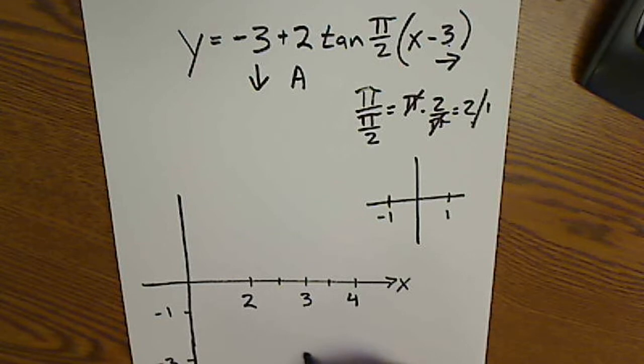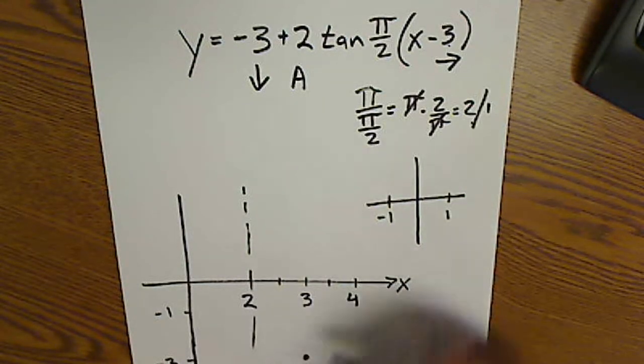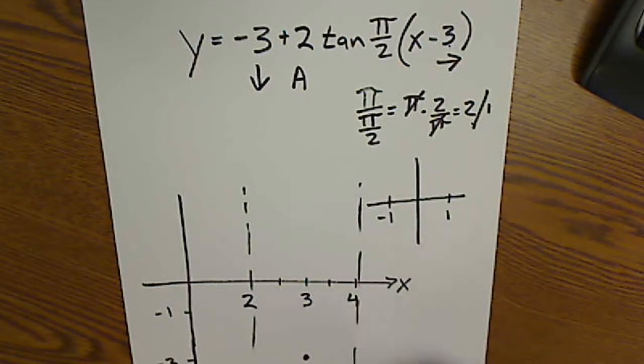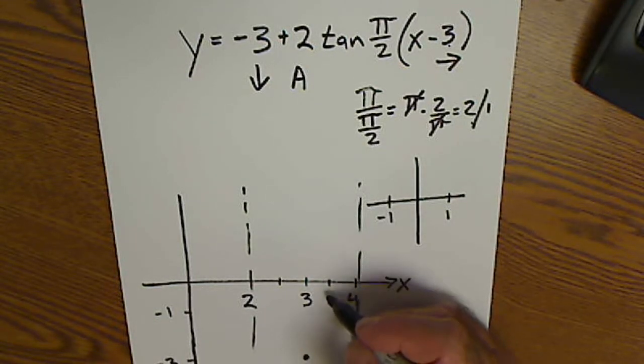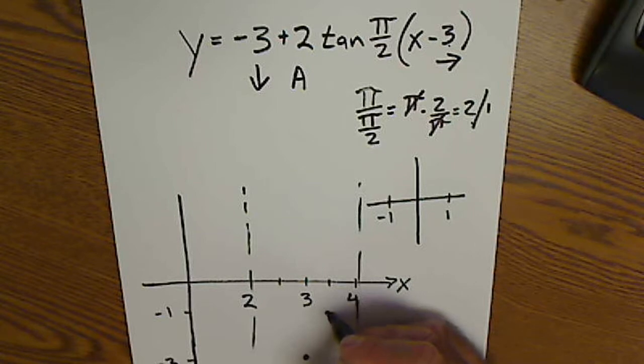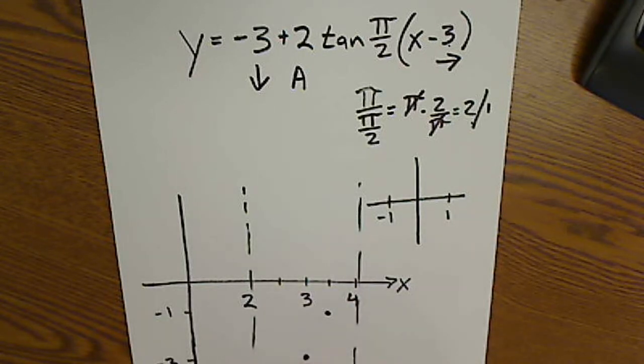Center of my tangent graph is exactly at (3, negative 3). Asymptotes are at 2 and 4. At 3.5, I'm at negative 1. At 2.5, I'm at negative 5.